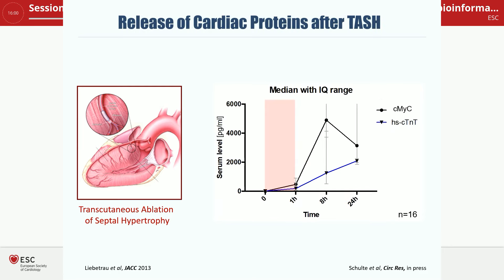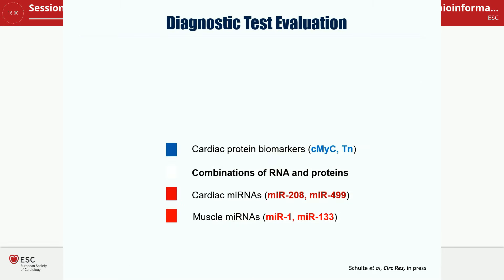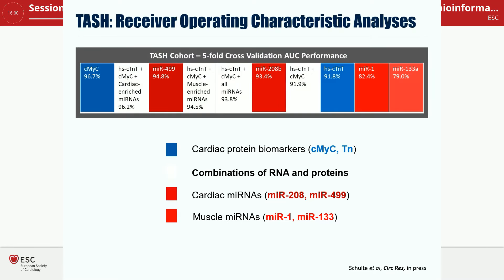This is very different from the time course of troponin, which shows its peak level only 24 hours after injury. So indeed there could be different kinetics involved in the release of cytosolic proteins compared to myofilament proteins. Cardiac myosin-binding protein C found by proteomics also shows a steep rise but then declines at 24 hours when troponin is still rising. In the receiver operating characteristic analysis for TASH, the best performing biomarker was cardiac myosin-binding protein C, which outperformed troponin and cardiac microRNAs.